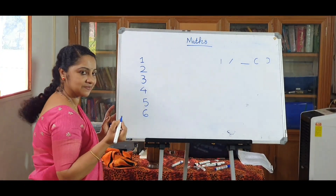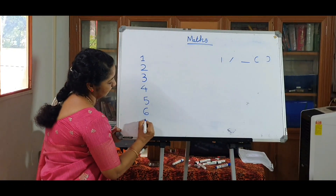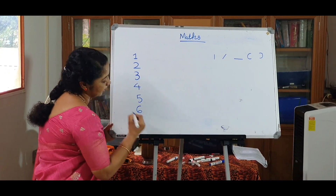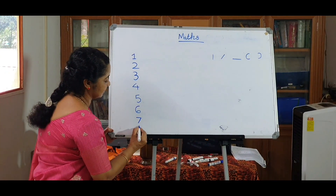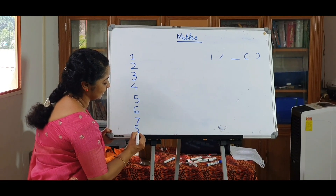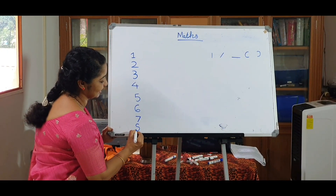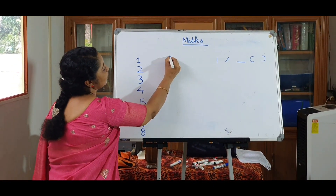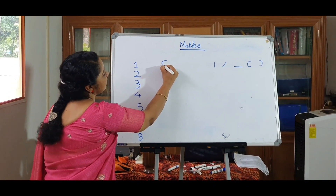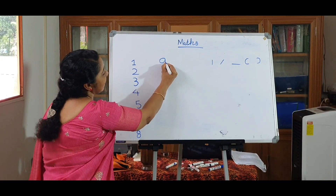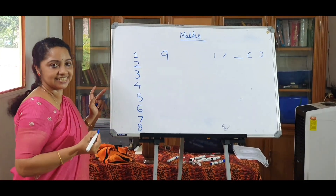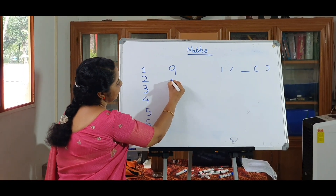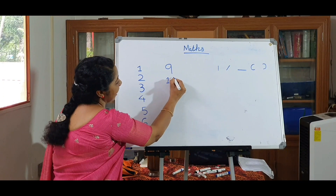And five: sleeping line, standing line, and a curve. Six: a curve joins a curve. Seven: sleeping line with an oblique line. And eight: we write a curve and join this curve. And nine: first use a curve and then a standing line. Nine.